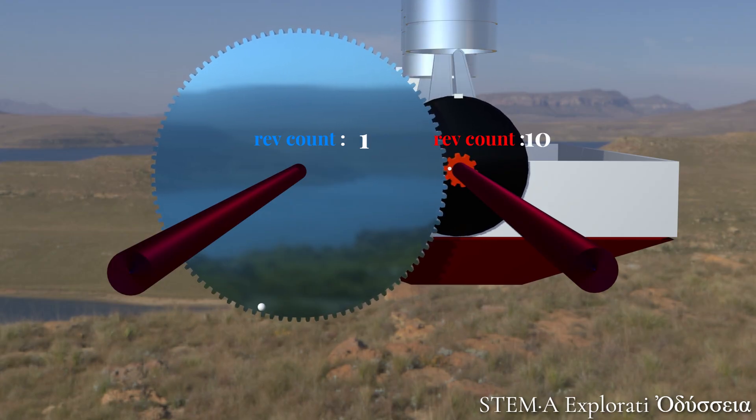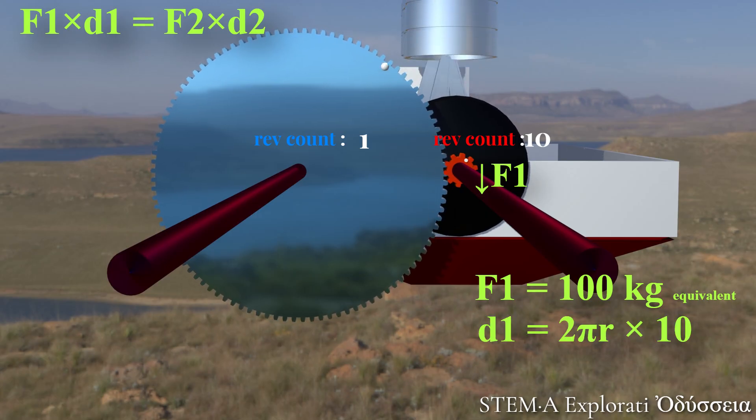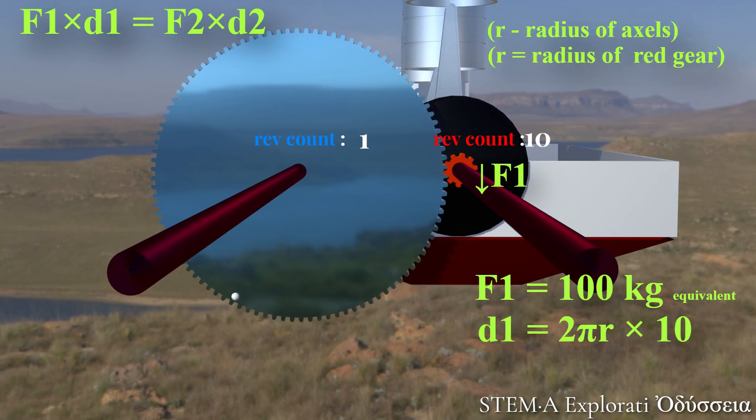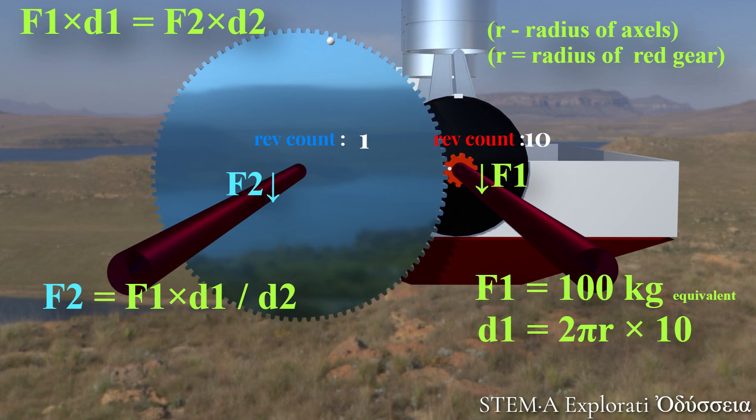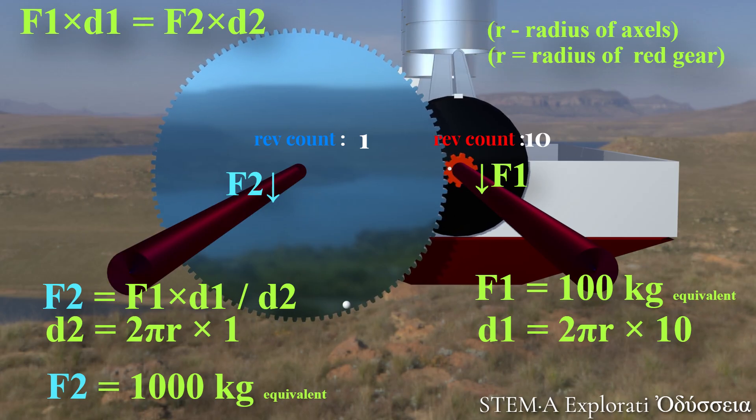So, we can see that the blue gear's axle makes one full turn for every 10 turns of the red gear's axle. Now, let's plug these values into the mechanical advantage formula. If we assume both axles to have a radius R, and that the radius of red gears also R, then the rotational force, or torque available at axle of blue gear, come to 1,000 kg equivalent.